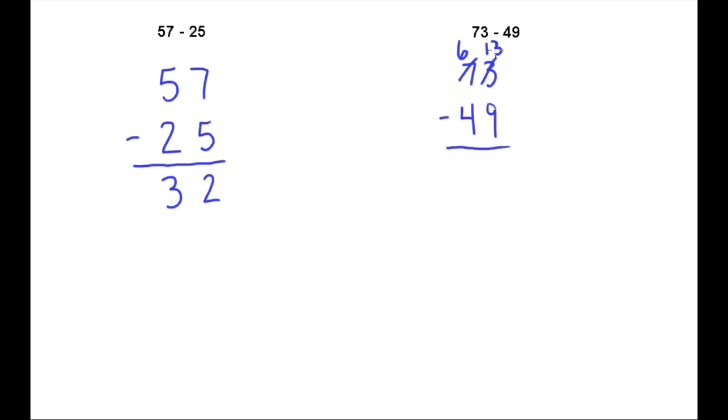So now that I've done that, I can take thirteen minus nine, that gives me four, then six minus four gives me two. So I have a difference of twenty-four.